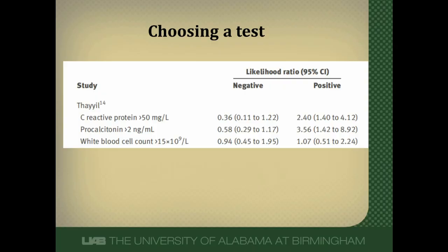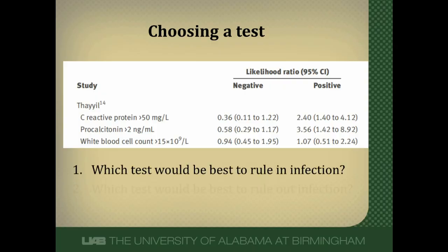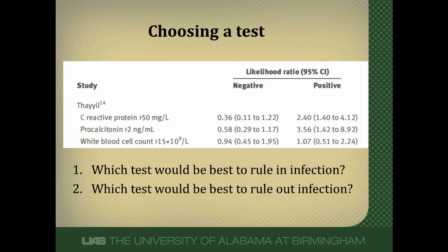This is a table from a study that looked at a variety of lab tests to figure out how good they were at determining if a child had infection. There are three different tests: C-reactive protein, procalcitonin, and white blood cell counts. This table demonstrates two important components about likelihood ratios. The first is that every test has both a positive and a negative likelihood ratio. I want you to figure out which test you should choose to rule in infection, and which to rule out infection — pause the video and think about it.